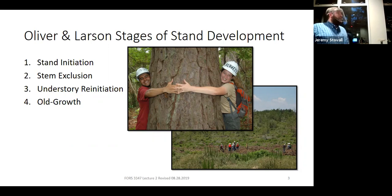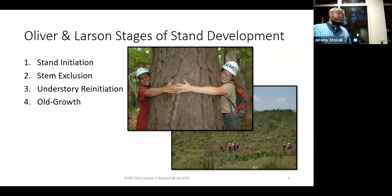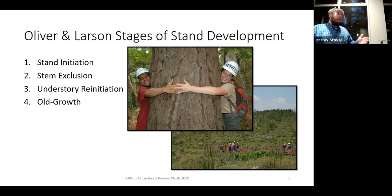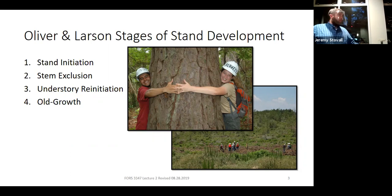What could be the dividing line between stem exclusion and understory re-initiation? Gap formation is a great example. What's causing those gaps to form? Trees falling out. Why are they falling? They died — but did they die from competition with one another? Wind comes in. Does stand density have much influence on wind damage? You start moving into density-independent mortality, where the causes of mortality aren't directly linked to competition with other trees. Rather they're a variety of factors — lightning striking a single tree, windthrow, insect outbreaks, disease outbreaks — all sorts of disturbances leading to gap formation and subsequently gap expansion.